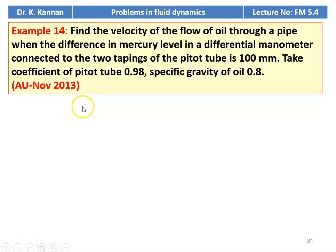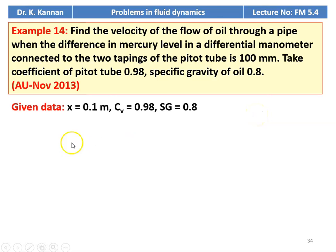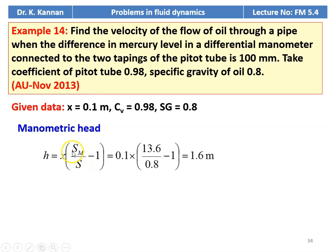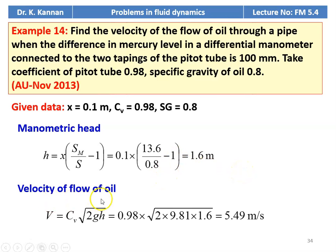Example number 14 from the November 2013 question paper: find the velocity of flow of oil in a pipe when the difference in mercury level in a differential manometer connected to the two tappings of the Pitot tube is 100 millimeters. Coefficient of velocity Cv equals 0.98, specific gravity of oil is 0.8. The manometric head H = X × (S_m / S_oil − 1) = 0.1 × (13.6 / 0.8 − 1) = 1.6 meters. Velocity V = Cv × √(2GH) = 0.98 × √(2 × 9.81 × 1.6) = 5.49 meters per second.